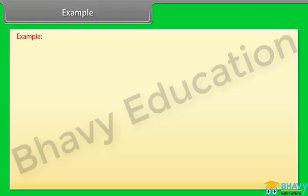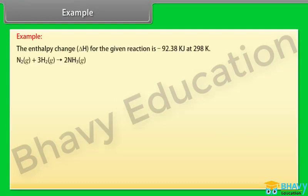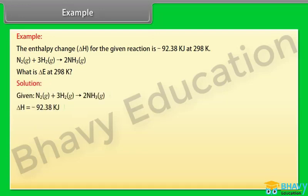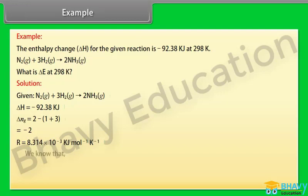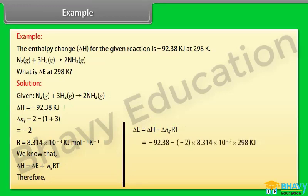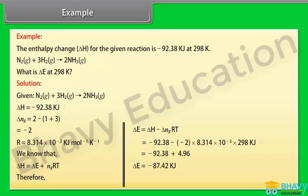Example — relationship between delta H and delta E. The enthalpy change delta H for the given reaction is −92.38 kJ at 298 K. What is delta E at 298 K? Given: delta H = −92.38 kJ, delta NG = 2 − (1 + 3) = −2, R = 8.314 × 10⁻³ kJ mol⁻¹ K⁻¹. Using delta H = delta E + delta(NG)RT, therefore delta E = delta H − delta(NG)RT. Substituting the values, delta E = −87.42 kJ.